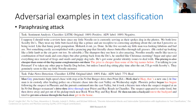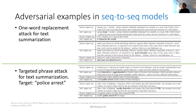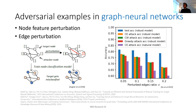For sequence-to-sequence models, this generalizes to translation tasks where you can embed keywords in a source sentence such that the translated output contains something you want to appear. For graph neural networks, you can change features on nodes or perturb edges by adding or removing a few edges. By making very small changes to the graph neural network, you observe a significant drop in model performance.